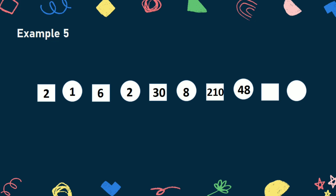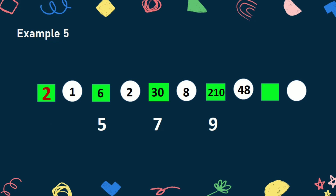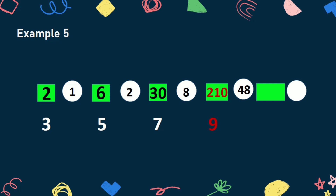Find the missing terms in the following situations presented. Can you find the pattern or sequence used? The numbers inside the squares are multiplied by odd numbers 3, 5, 7, and 9. Starting with 2 times 3 is equal to 6. Then 6 times 5 is equal to 30. 30 times 7 is equal to 210. 210 times 9 is equal to 1890. So, the missing number in the last square is 1890.